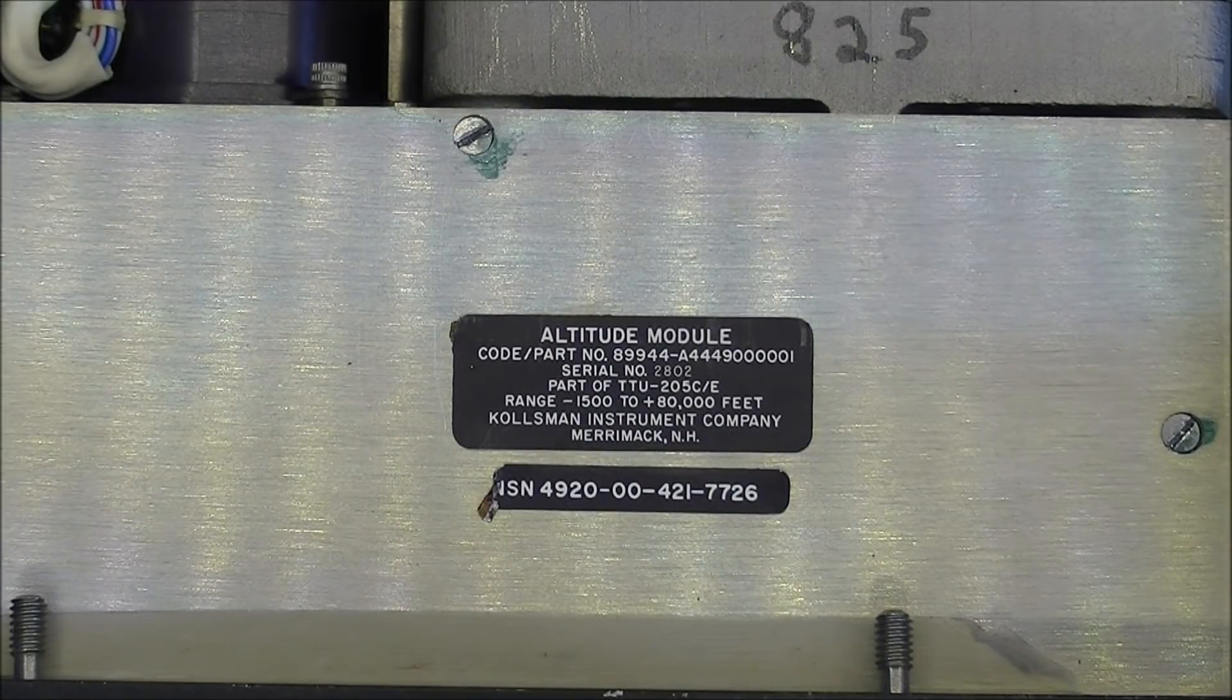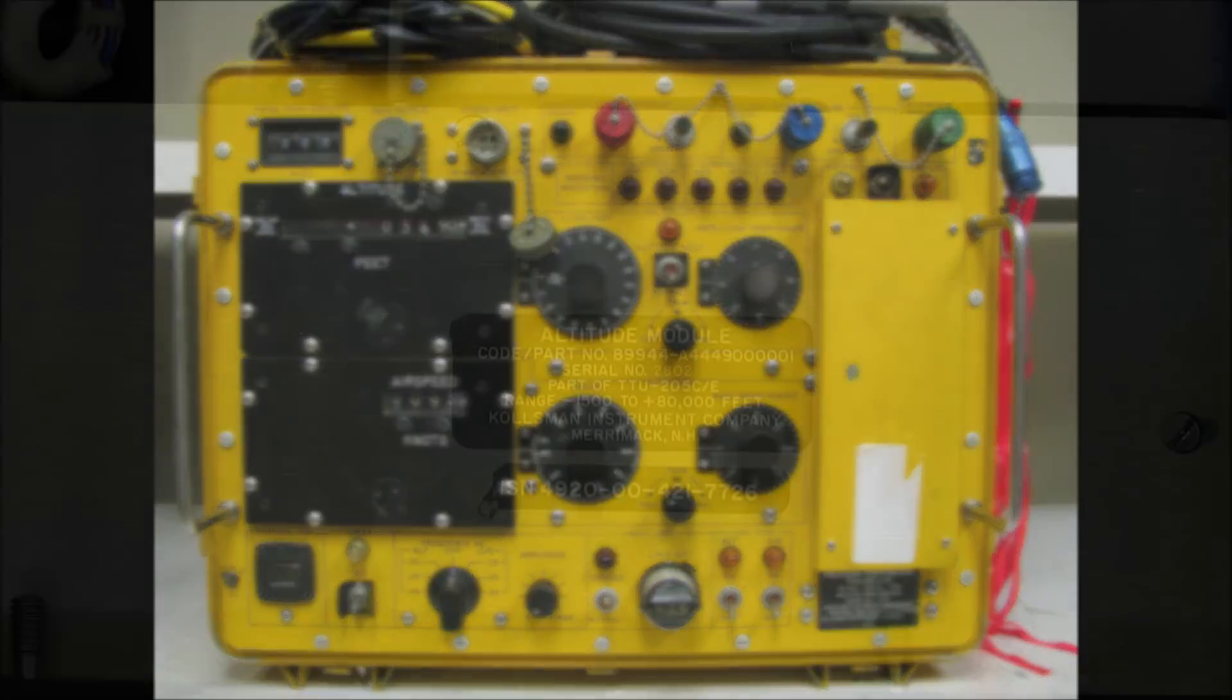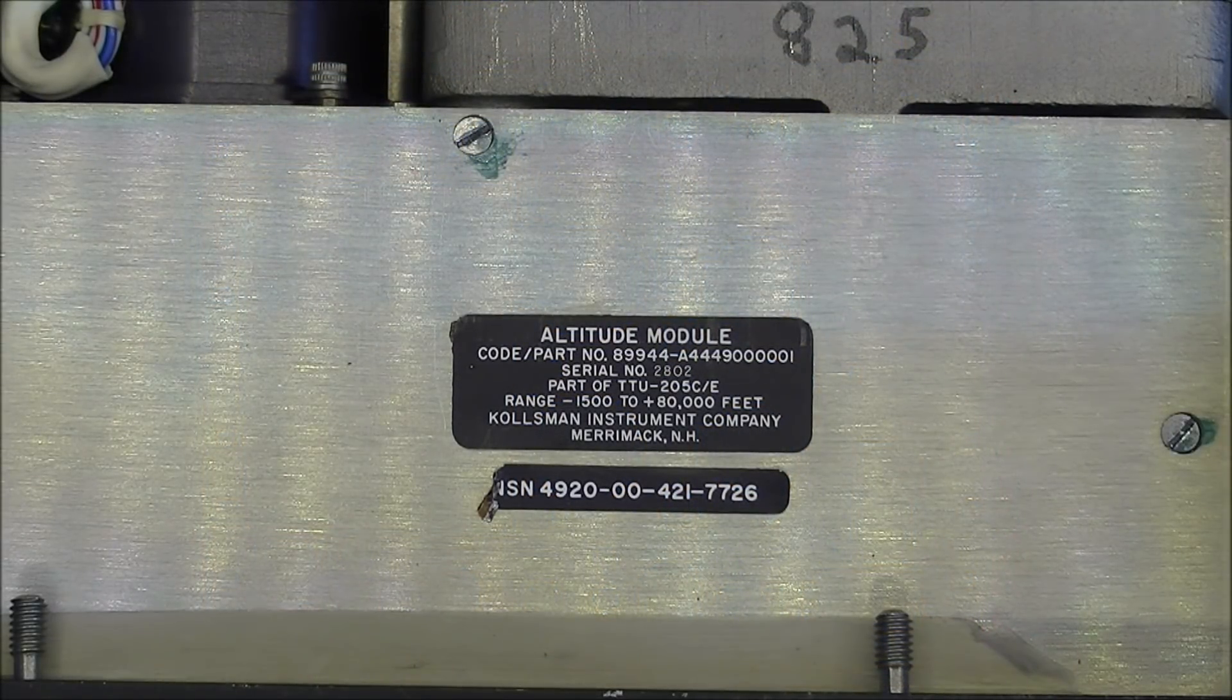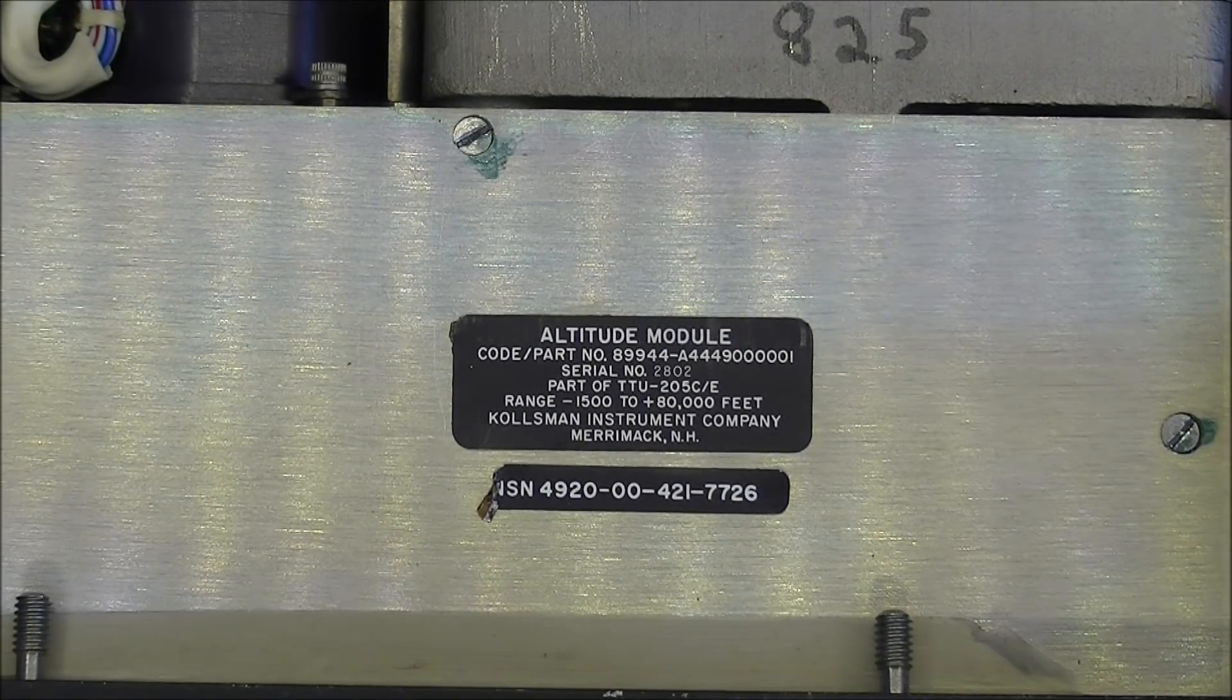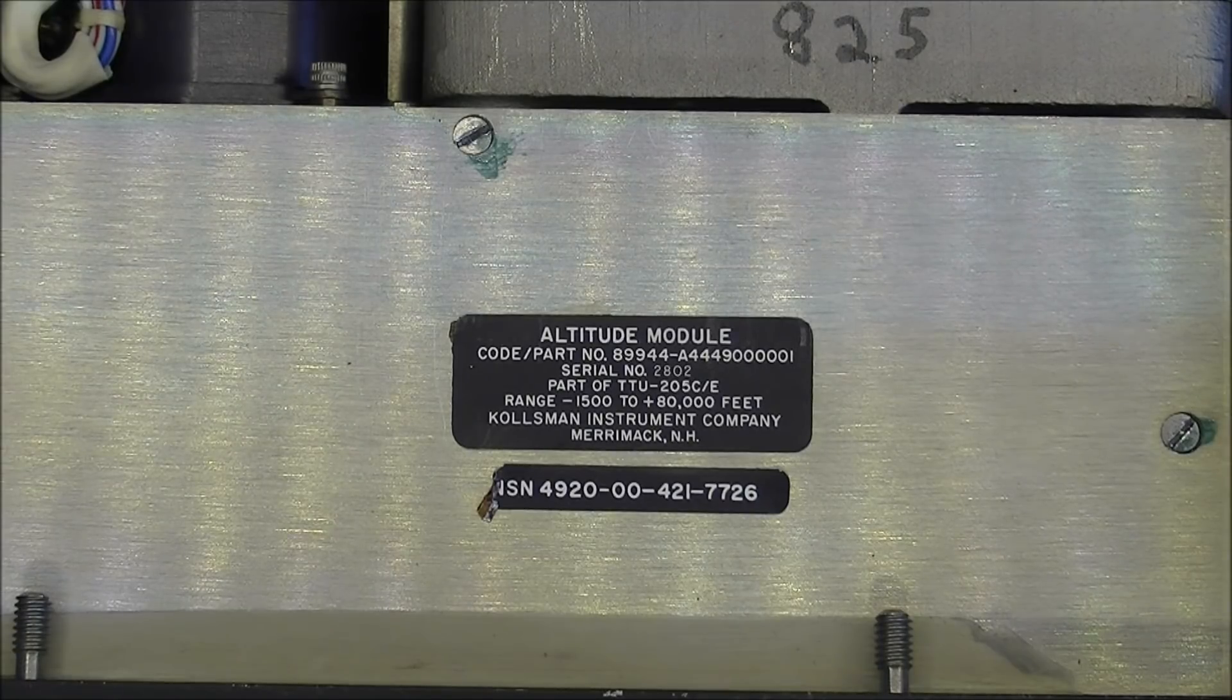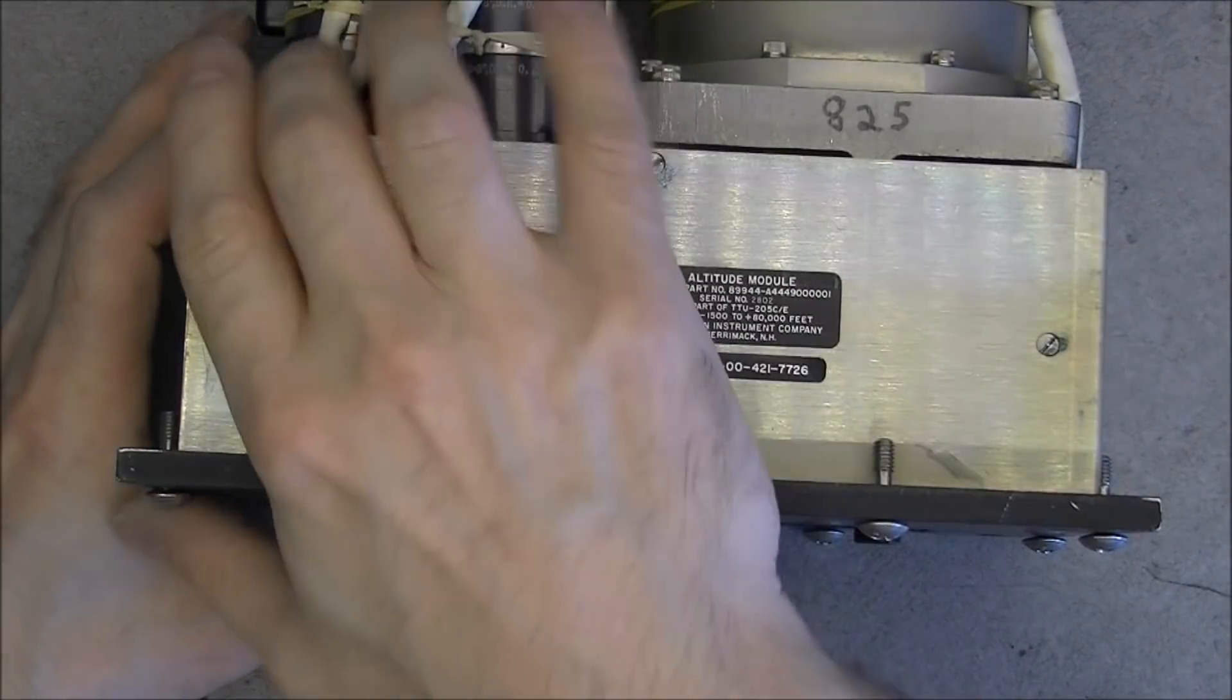Let me google it for you and if I find anything I will insert a picture here. So this is a picture of eBay item TTU-205CE that was available for $1000 and yes obviously it is a big avionics test set to test altimeters probably. So this is part of the test set and it must be the altitude reference module.